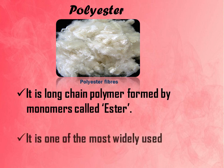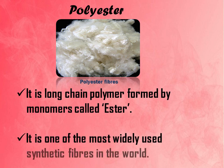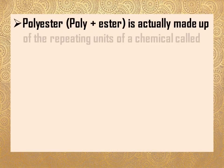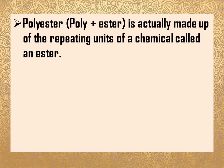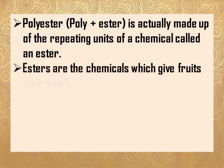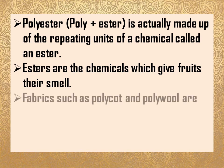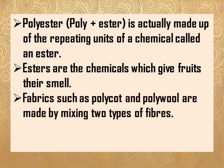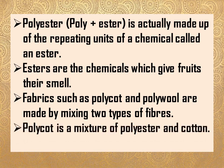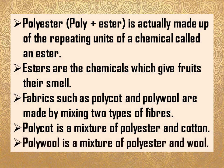Polyester is a long chain polymer formed by monomers called esters. It is one of the most widely used synthetic fibers in the world. Polyester is made up of repeating units of a chemical called an ester. Esters are the chemicals which give fruits their smell. Fabrics such as Polycoat and Poly Wool are made by mixing two types of fibers — Polycoat is a mixture of polyester and cotton, whereas Poly Wool is a mixture of polyester and wool.